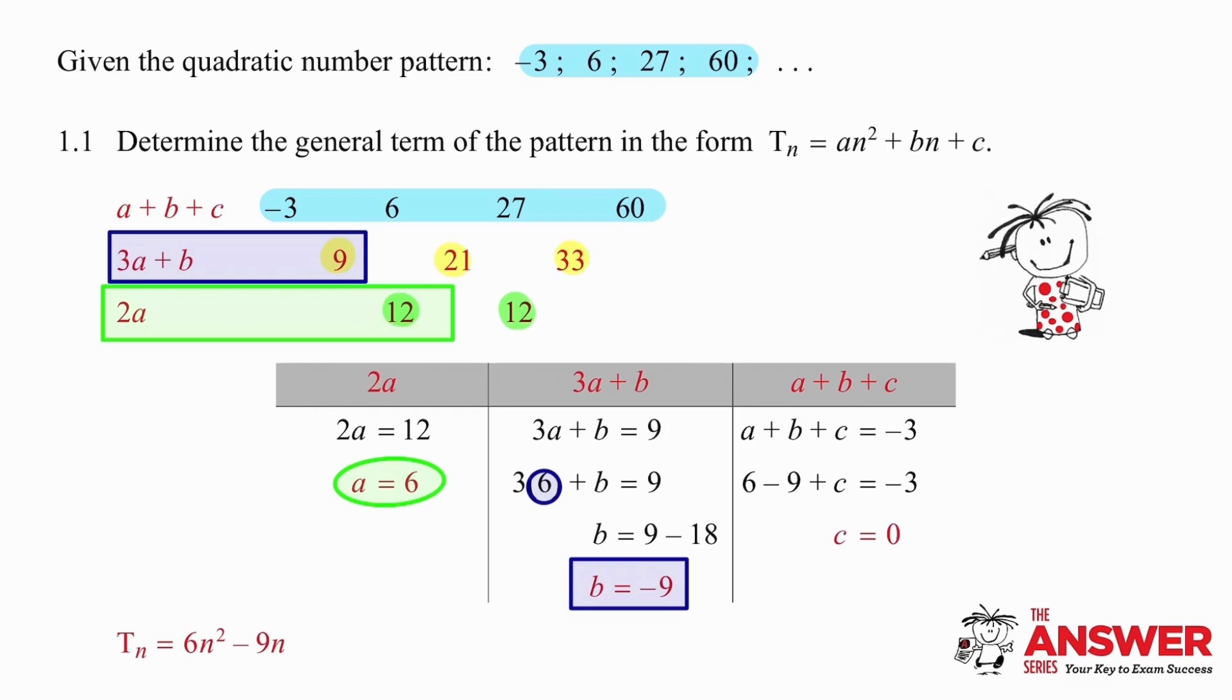Now we take the fact that a plus b plus c is equal to minus 3. We use the a and b values that we've already worked out and work out this time that c is equal to zero. So the general term of this pattern is generated by the formula Tₙ equals 6n² minus 9n.